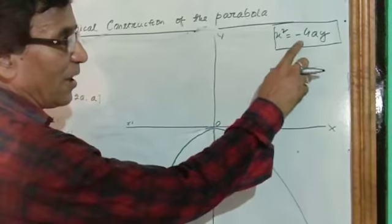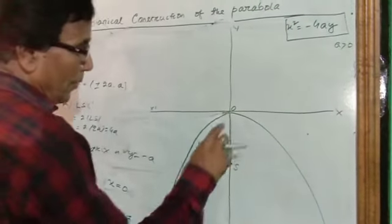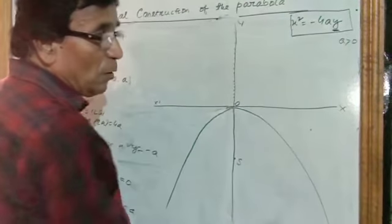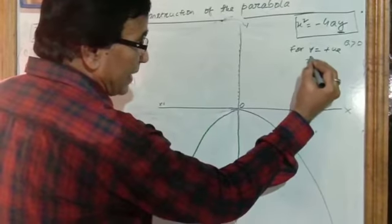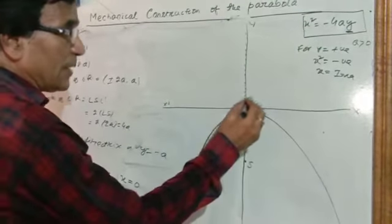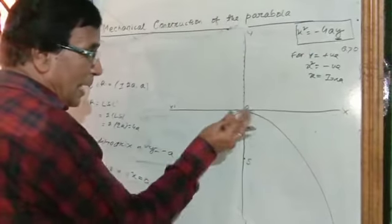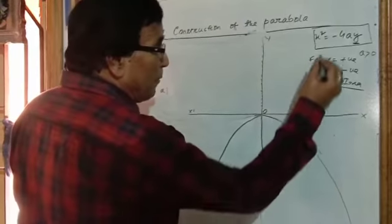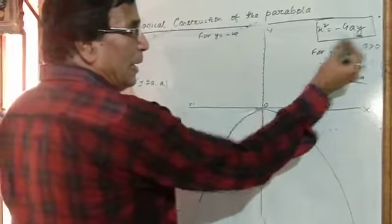Now we consider the mechanical construction of the curve x² = −4ay, where a > 0. For any positive value of y, x² becomes negative, which implies x becomes imaginary. Therefore the entire part of the curve x² = −4ay lies below the x-axis — it cannot lie above the x-axis because for any positive value of y, x becomes imaginary.